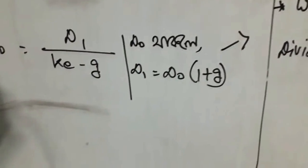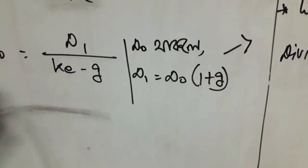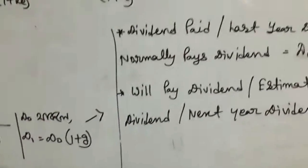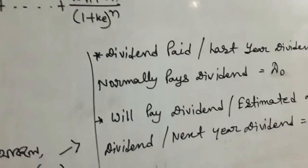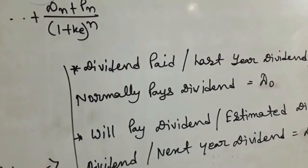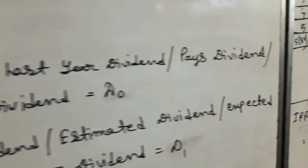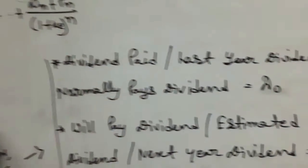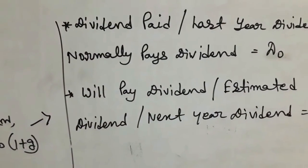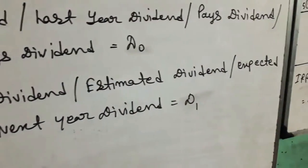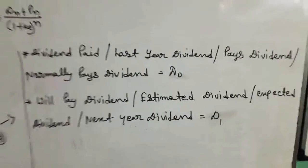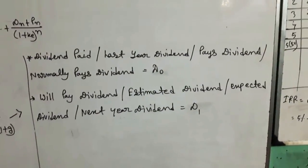If you look at the growth rate, you will get to value. So I have to write: where do I get D0 and where do I get D1? D0 is last year's dividend — normally pays dividend — so D0. D1 is will pay dividend, estimated dividend, expected dividend, next year dividend — so D1.